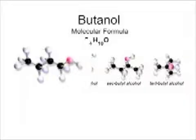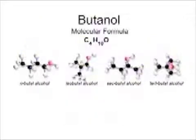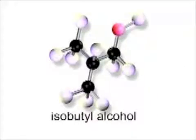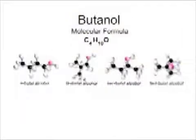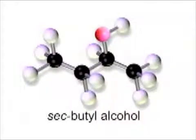Normal butanol, or N-butyl alcohol, consists of a straight chain of four carbon atoms with the OH group at the end of the chain. In the isomer that has the common name isobutyl alcohol, the carbon chain is not straight, but has a methyl group bonded to the central carbon of a three-carbon chain. The alcohol group is still bonded to a carbon at the end of the chain.